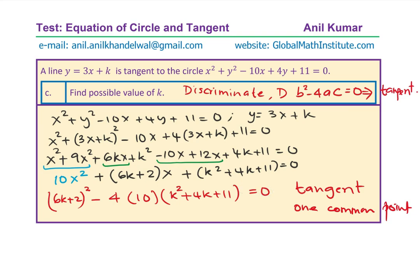We can expand and simplify. Expanding (6k + 2)² gives 36k² + 24k + 4. Then minus 4 × 10 = 40 multiplied through: −40k² − 160k − 440, equals 0.